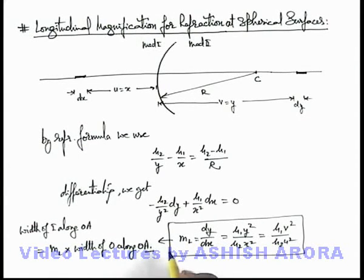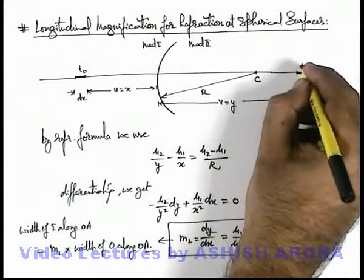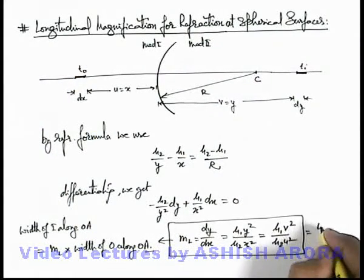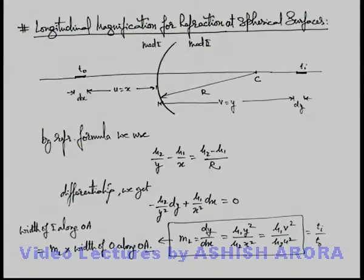Now if width or thickness of object and image are written as t o and t i, then this can be written as t i by t o, or we can also write w i or w as width of object and image along principal axis.